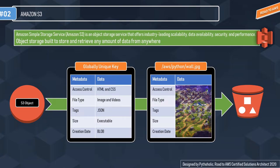Let's discuss what the S3 object structure looks like. Every object has its own unique global key, which you use to access the object data. The metadata allows you or the user to work with information for managing and querying data. Access control is a basic security measure to determine who has access to the object, and metadata helps control this information. You can have basic file types like images or videos, tags for object tagging, size of the object, its creation date, and in data you have various supported file types: HTML, CSS, image files, video files, JSON, executables, and blobs. The global key is basically the path to the object — it looks similar to a URL.